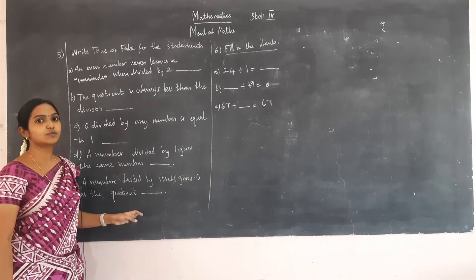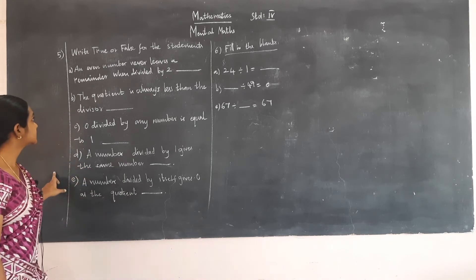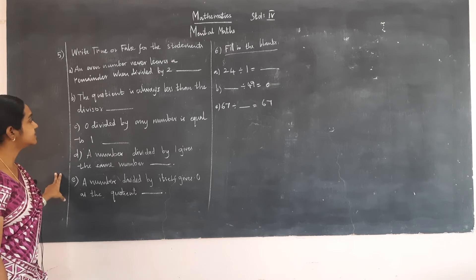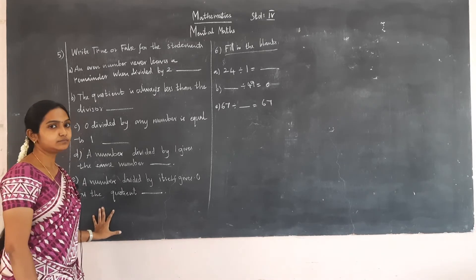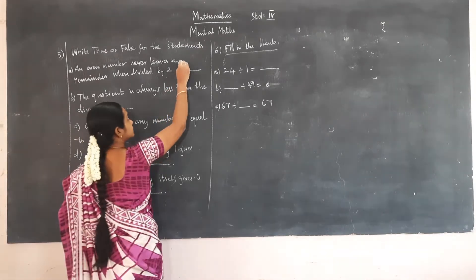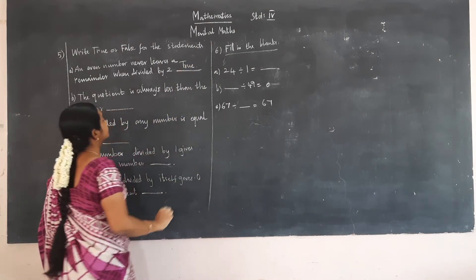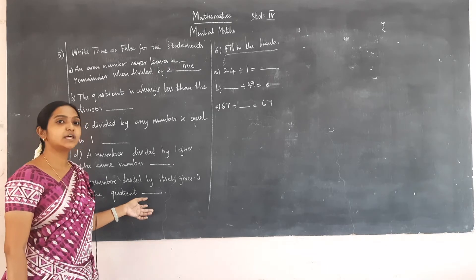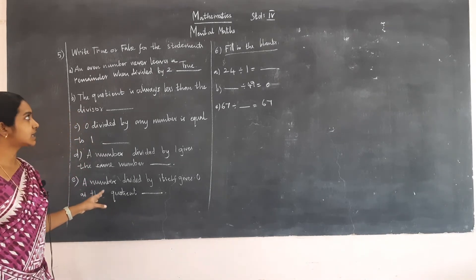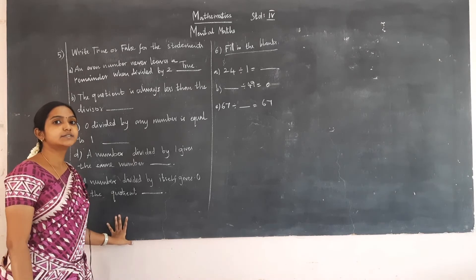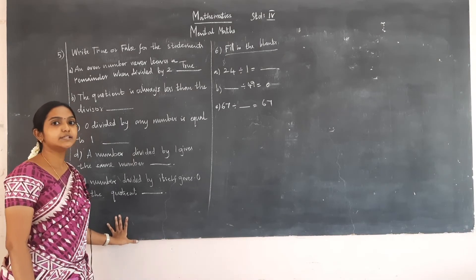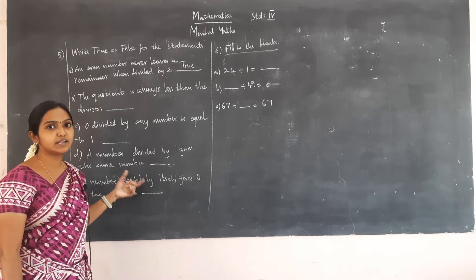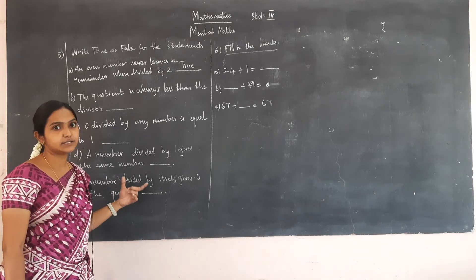The next question is to write true or false for the statements. The first statement is: an even number never leaves a remainder when divided by 2. The statement is true. All even numbers will be exactly divided by 2 with no remainder. For example, 18: 9 twos are 18, so 18 is an even number and when divided by 2, it leaves no remainder. So the answer is true.